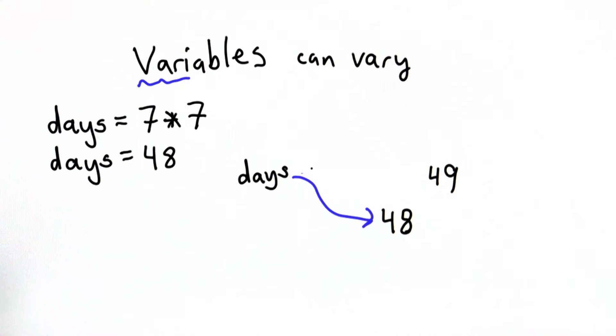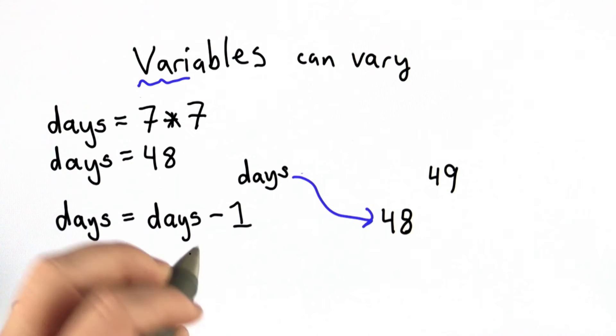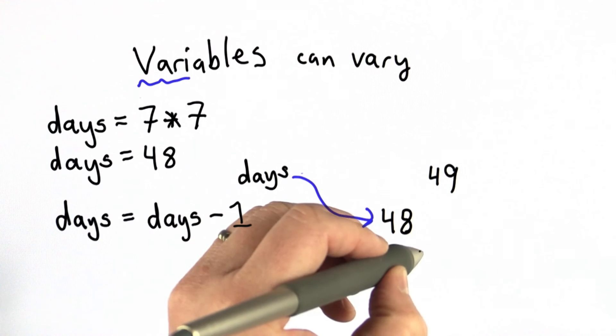Where things get more interesting is we can use variables in their own assignment statements. So here we have an assignment statement where we have the value days minus 1, and we assign that to days. So what happens with that assignment? Well, we evaluate the right side first. We look for the value of days, and we see that it refers to 48. We compute days minus 1, and we get the value 47. Then we do the assignment.